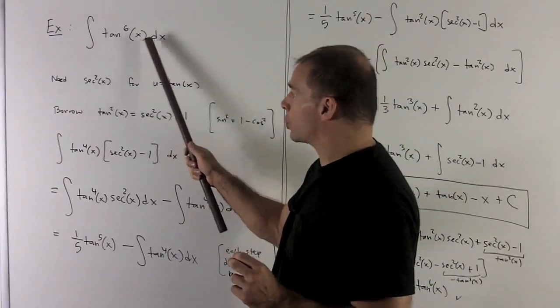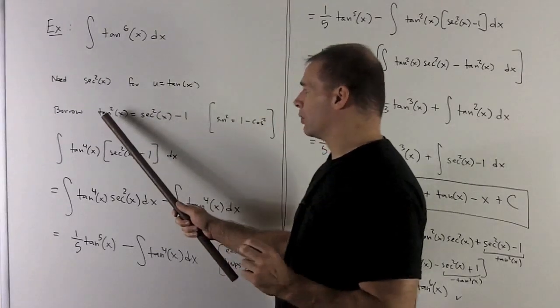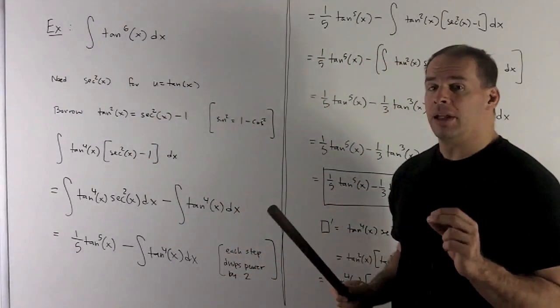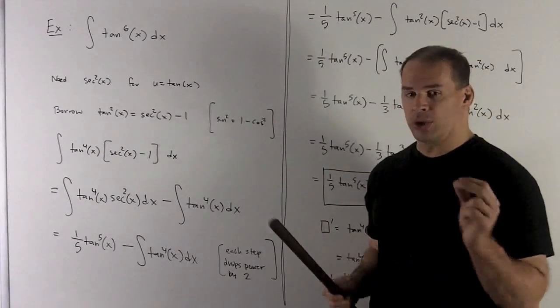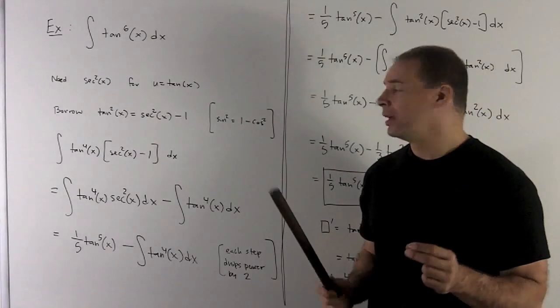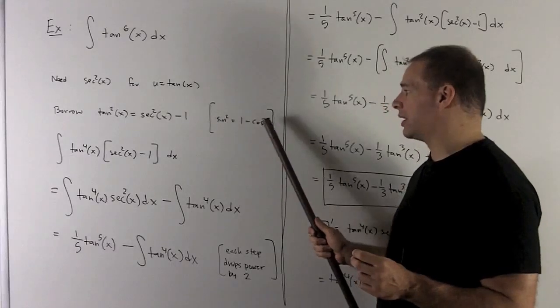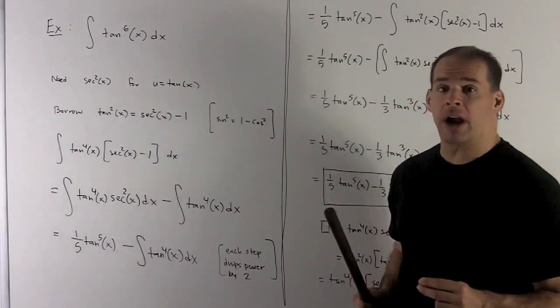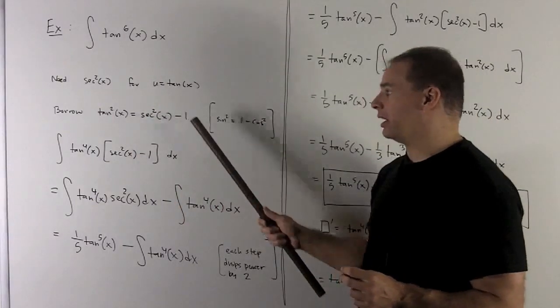If I borrow a tan squared from this, I can rewrite that as secant squared x minus 1. This is because we have cosine squared plus sine squared equals 1. I'm going to push the cosine squared to the other side, divide everything by cosine squared. That's going to give me this identity here.